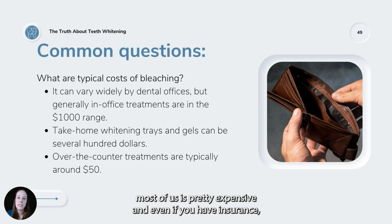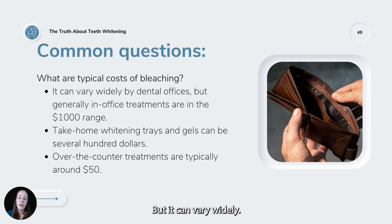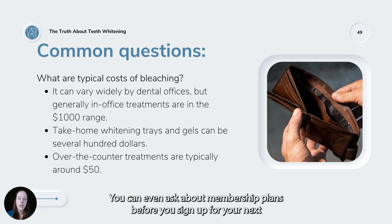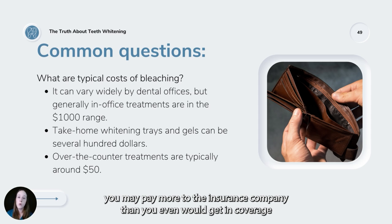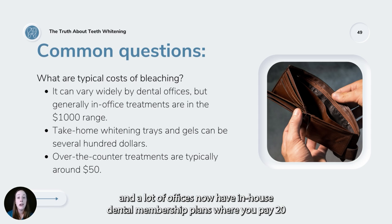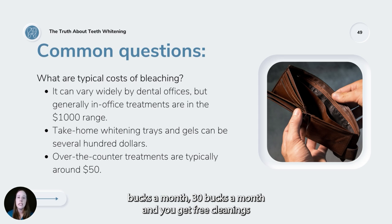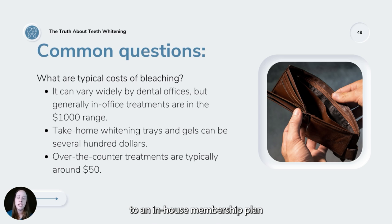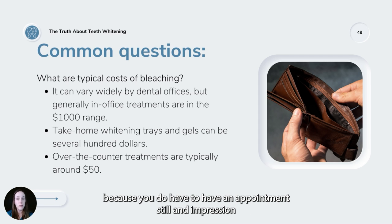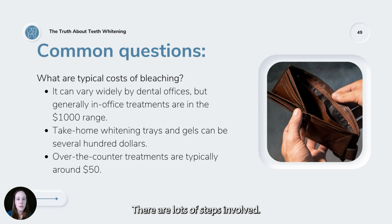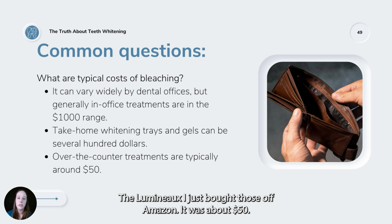How much does teeth whitening cost? Whitening is often cosmetic and not covered by insurance, but it varies widely. Many offices have discount or membership plans — some offer free cleanings and whitening discounts for around $20 to $30 per month, which may be cheaper than traditional insurance. Professional in-office whitening runs around $1,000 per session. Take-home custom trays are on the order of hundreds of dollars, as they still require an appointment, impressions, and lab work. Over-the-counter treatments like Crest strips tend to run about $40 to $50.